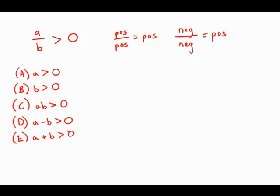So it's possible that a and b are both positive, but it's also possible that a and b are both negative. So right away that means that answers A and B are out. We have no guarantee that a or b is positive because they both could be negative.